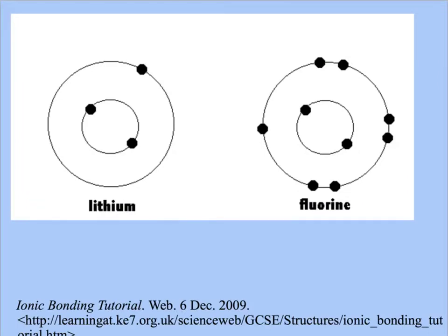So, for example, lithium has two energy levels. There are two electrons in the first level and one electron in the second level. Fluorine has two levels as well. Two electrons in the first level and seven electrons in the second level.